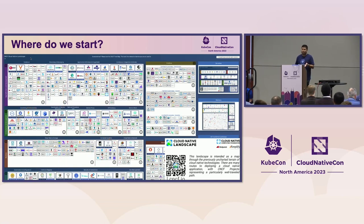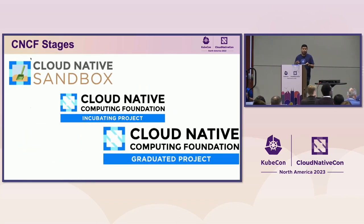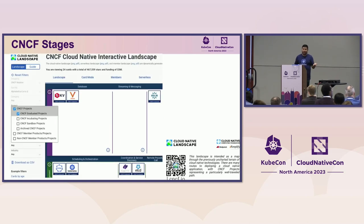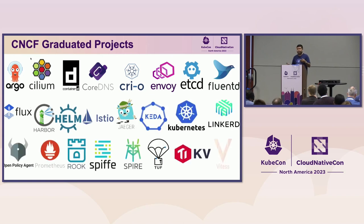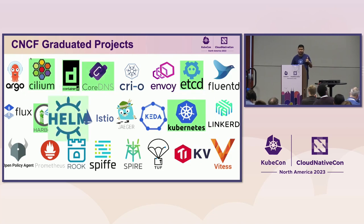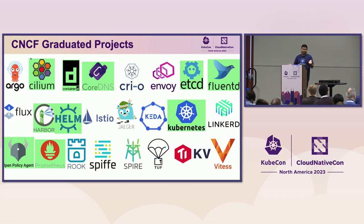I took inspiration from a sextant - my dad was a merchant marine and a sextant takes two points of reference to find latitude. So we're taking two points of reference for our cloud native journey. The first is graduated CNCF projects. There's a filter in the cloud native landscape for those, but there are still 24 graduated projects, starting with Kubernetes. The highlighted ones are what we'll use hands-on in this tutorial.